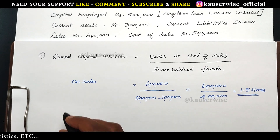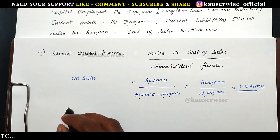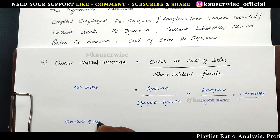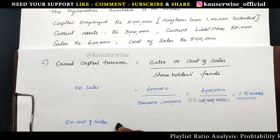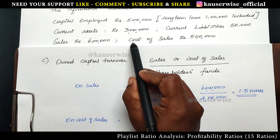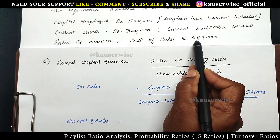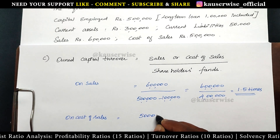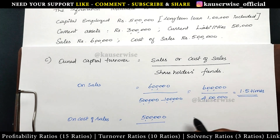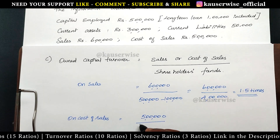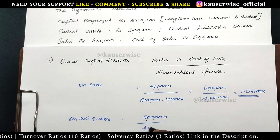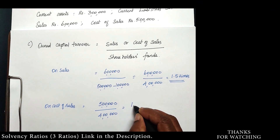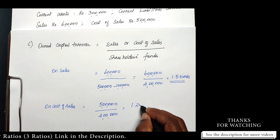In the same way, owned capital turnover ratio on cost of sales. Cost of sales is 5 lakhs divided by shareholders fund of 4 lakhs. The answer is 1.25 times.